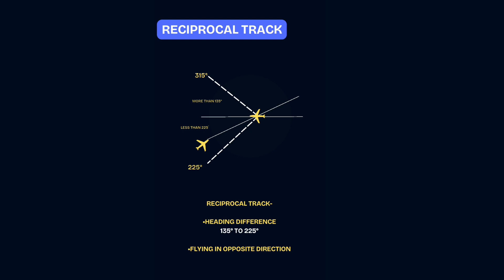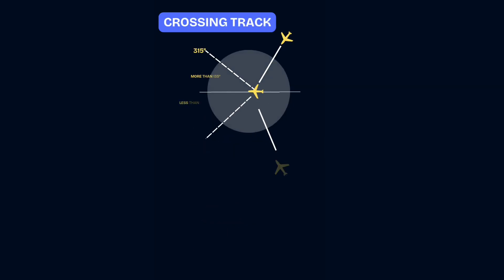Reciprocal tracks are when aircraft are flying toward each other. Their headings differ by more than 135 but less than 225 degrees.